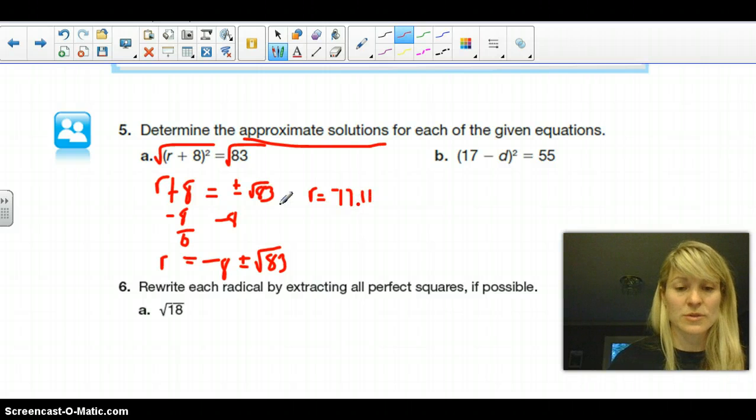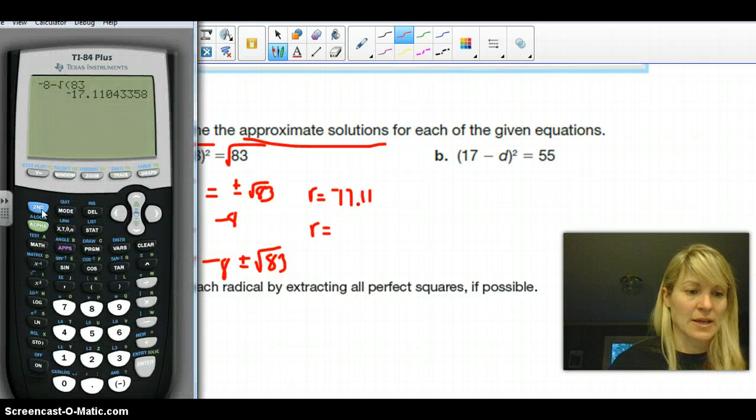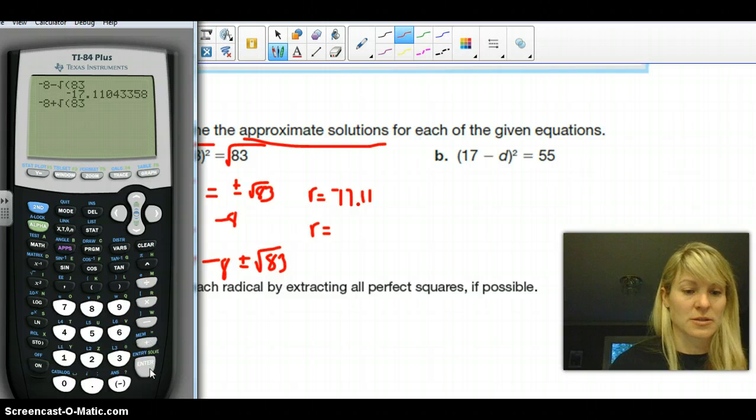Remember, and this is, we're finding the roots of this r. We're finding where it crosses the x-axis. And then we're going to do the other one. And I can do second enter, which brings the same exact thing I put in. And I can just change it to plus. And I get 1.11.